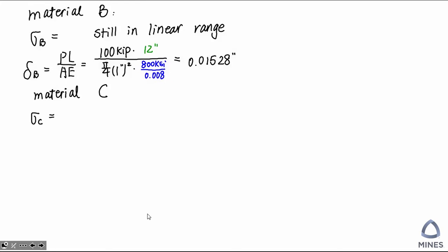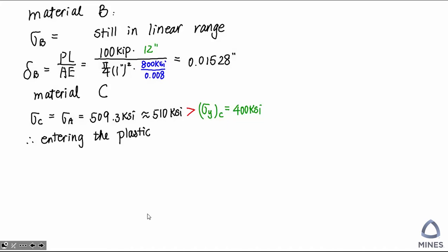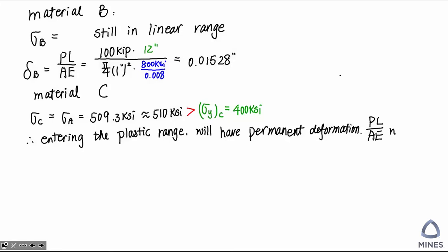Now we are going to do the same thing to calculate the real stress in material C. We can see the force is the same and the cross-sectional area is the same. From the picture, we can see the yield strength is 400 and the real stress is actually bigger than the yield stress. This means our material is already entering the plastic range, so the deformation is not going to be linear anymore — we are going to have permanent deformation, and the linear equation is no longer valid.